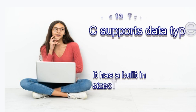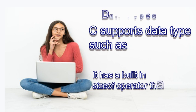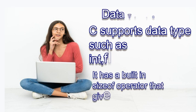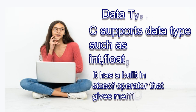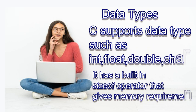Let's start with data types. A data type basically means the type of data it is associated with - whatever we use in a program must be of some particular type, that is known as a data type. C supports different data types such as int, float, double, and character. There are also some user-defined data types which we'll discuss in future videos.